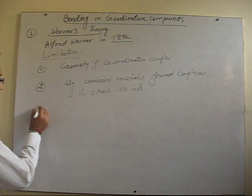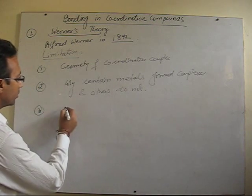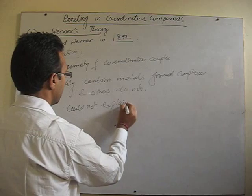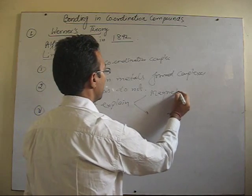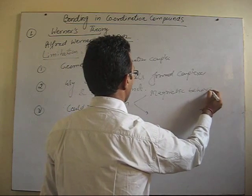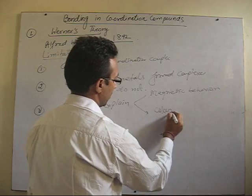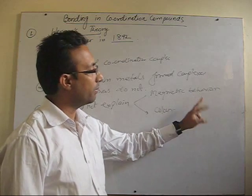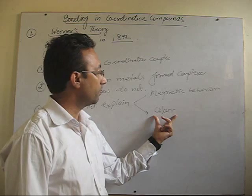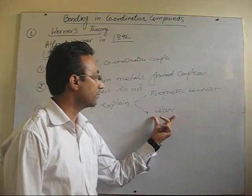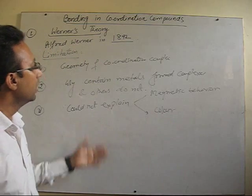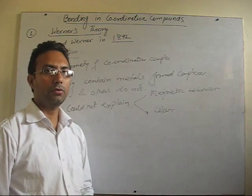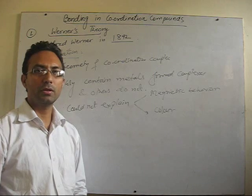The third limitation according to Werner is that he could not explain two things: the magnetic behavior of complexes, and the color of complexes. Complexes are found to be paramagnetic, highly paramagnetic, or diamagnetic, and they exhibit some specific color except in a few cases. He could not explain these three points.